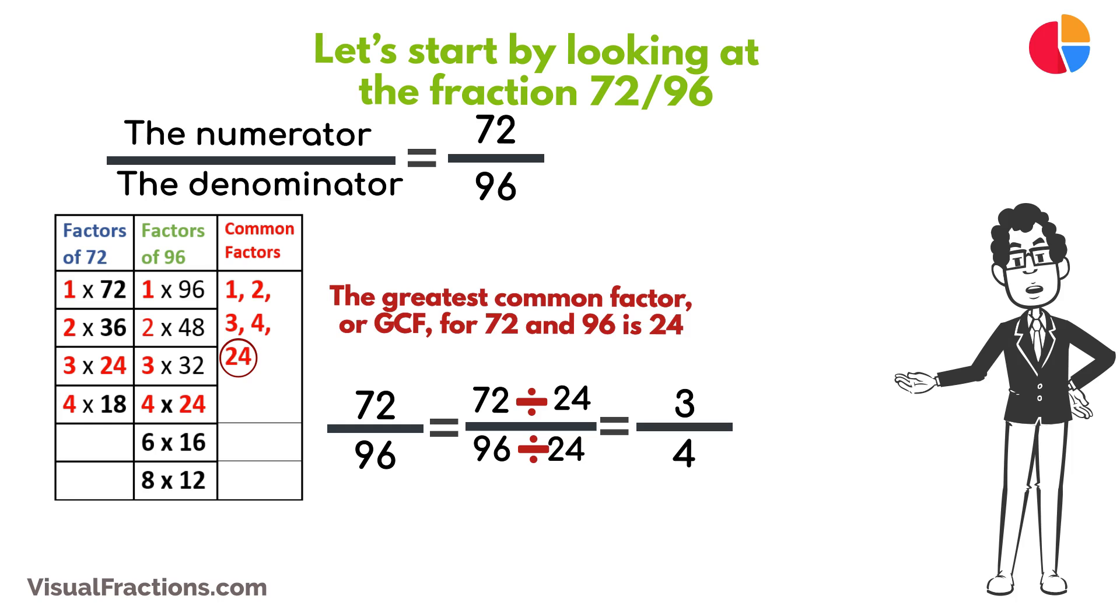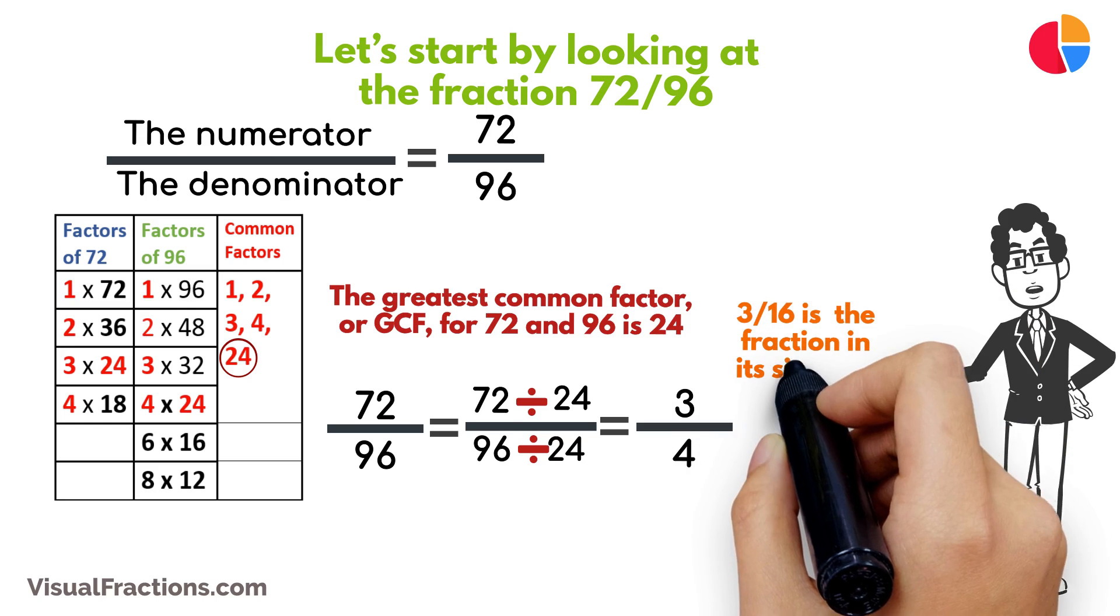So, simplifying 72/96, we end up with 3 quarters, which is the fraction in its simplest form.